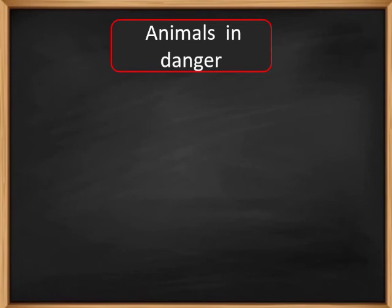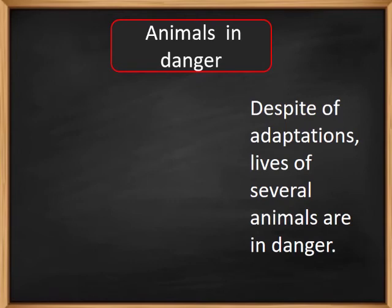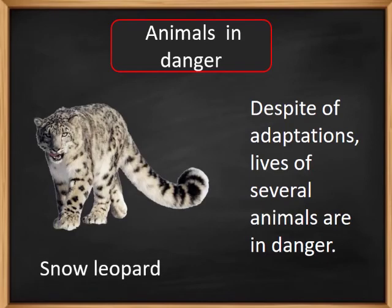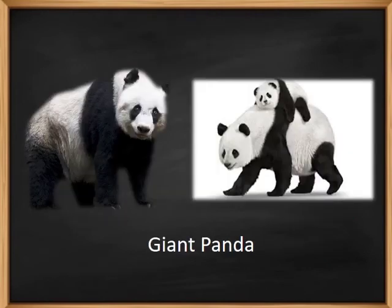Let us see what the animals in danger are. Despite many adaptations, the lives of several animals are in danger because of the activities of man. We are cutting down forests for our needs, and by doing so, we are taking away their homes and their food. An example of one such animal is the snow leopard. Giant panda is another example of an animal in danger.